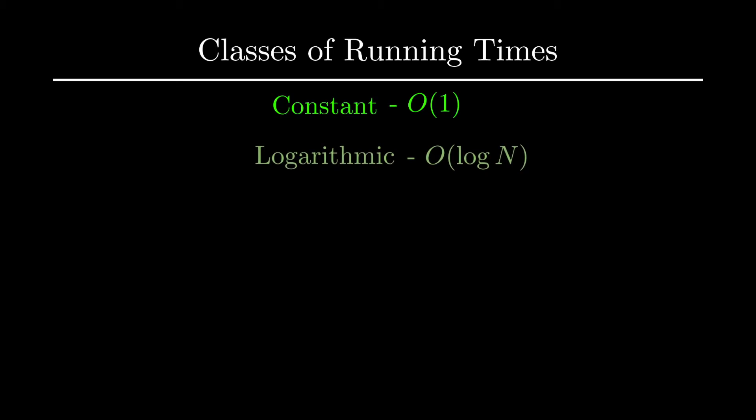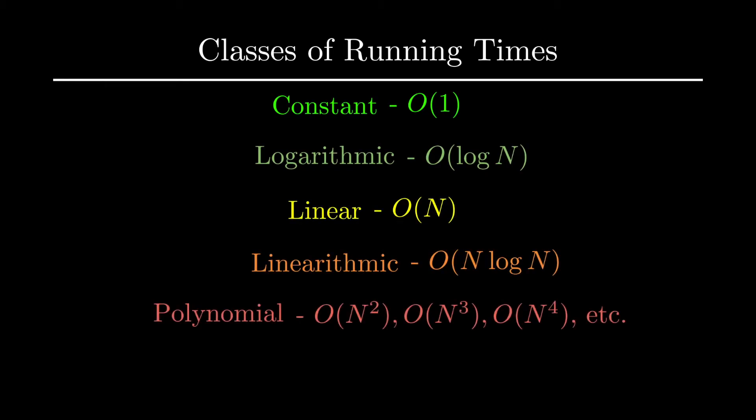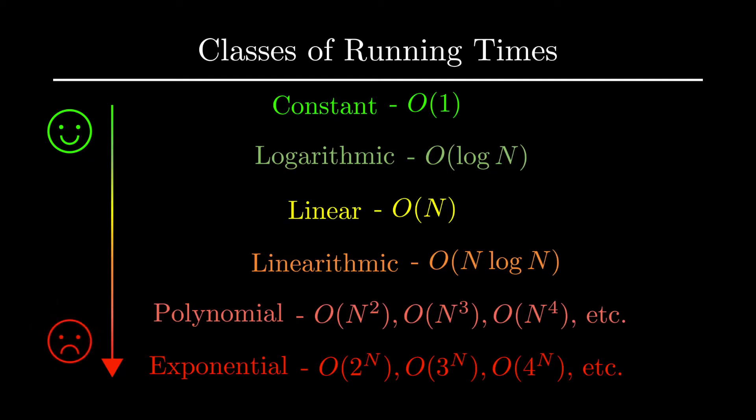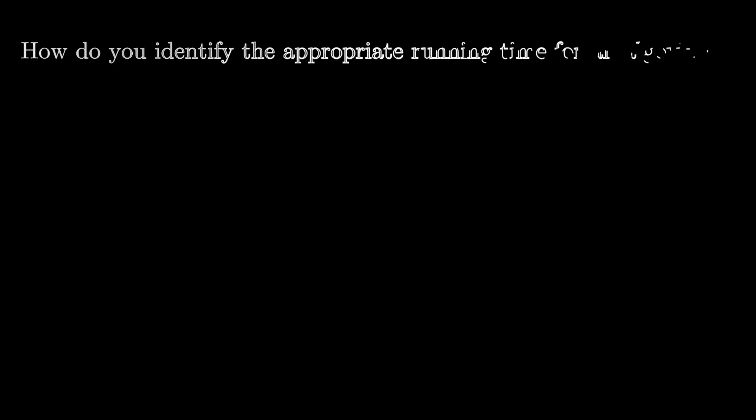The next thing I want to talk about is how we actually go about finding the running times of various functions. One nice thing about finding running times is for almost all types of problems you'll see, the Big O runtime will fall into one of the following six classes. From best to worst, the classes are constant, logarithmic, linear, linearithmic, polynomial, or exponential. You might see some others on occasion, but a good majority of the algorithms you will encounter will fall into these classes. Let's now go over some steps to actually find the Big O runtime of an algorithm.